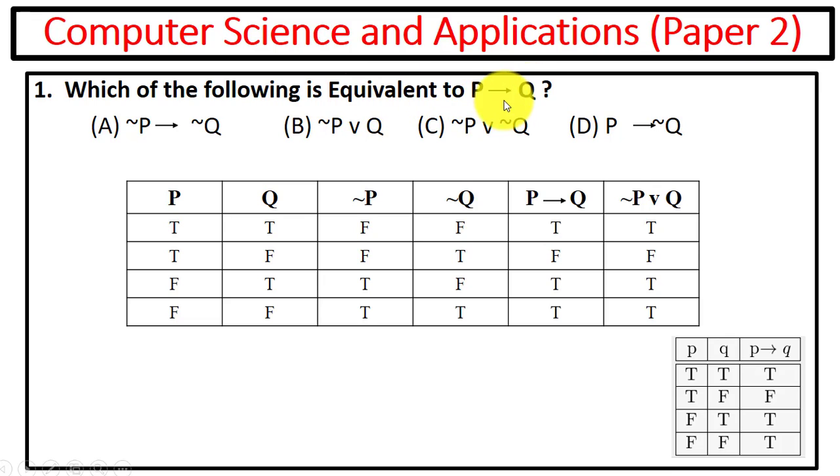For this, we have to first construct the truth table for P implies Q, that is this one. Now we will check out of four which one is equivalent to this. So we have to find out the value for option A, B, C, and D, then we will match which one is equivalent. You can see here option number B is equivalent to this one, as the values for this is true, false, true, true, true, false, true, true. So option B is correct.